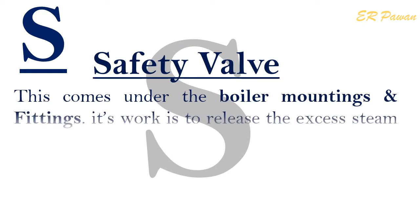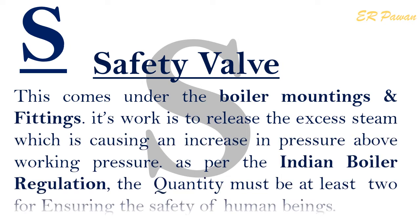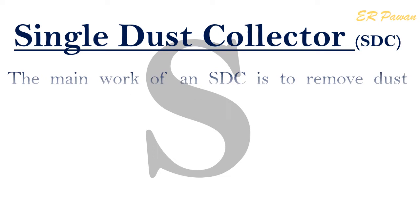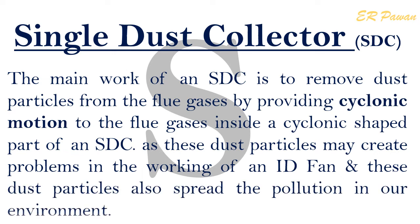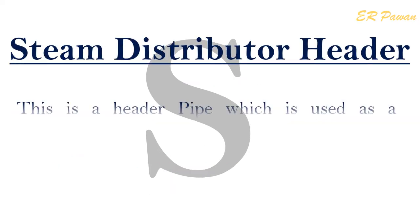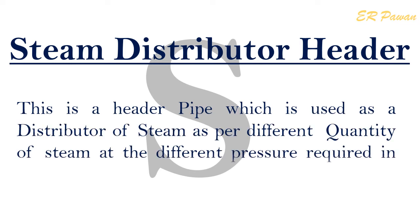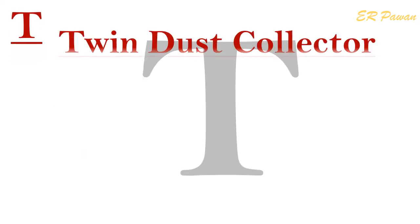S — Safety Valve: This comes under boiler mountings and fittings. Its function is to release excess steam which causes pressure to increase above working pressure. As per the Indian Boiler Regulation, the quantity must be at least two for ensuring the safety of human beings. Single Dust Collector (SDC): The main work of an SDC is to remove dust particles from flue gases by providing cyclonic motion inside a cyclone-shaped part. These dust particles can create problems in the working of an ID fan and also spread pollution in the environment. Steam Distributor Header: This is a header pipe used as a distributor of steam at different quantities and pressures as required in processes.